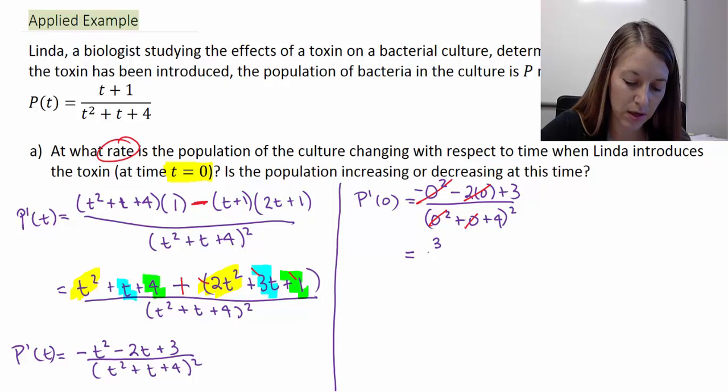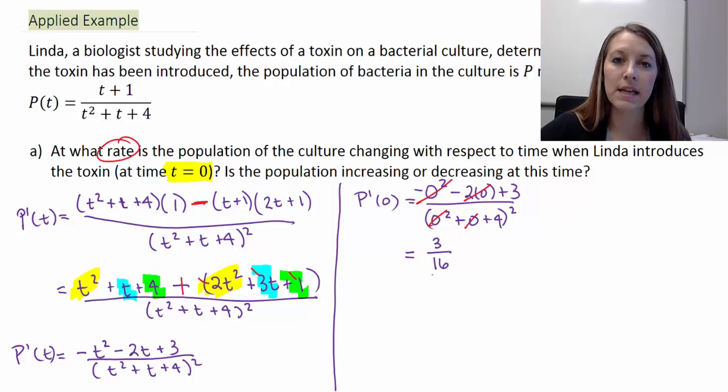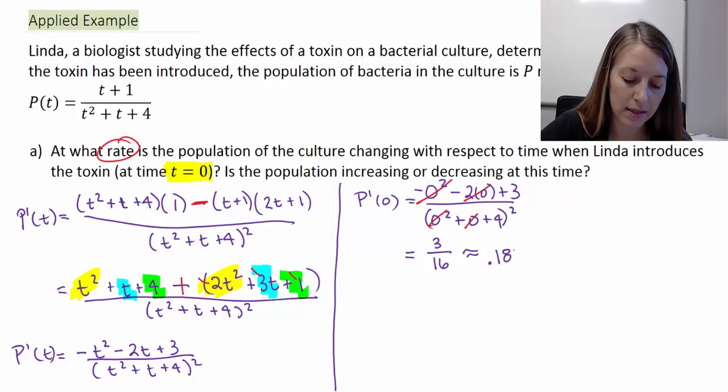On the top, we have positive 3. On the bottom, we have 4 squared, which simplifies to be 16. Since this is an applied problem, it is probably best to go ahead and figure out what the decimal approximation of that is. And that is 0.1875.